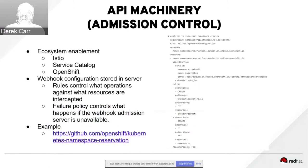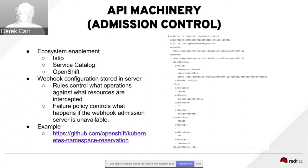Why is this important? Projects like Istio need to inject a common sidecar container into every pod spec. Similarly, the service catalog wanted to dynamically inject environment variables into pods on creation. There was community work around pod presets. OpenShift is interested in intercepting what happens in Kubernetes to perform its own constraints and validation needs. This mutating and validating webhook is really a big ecosystem enabler because it allows people to intercept a creation request and do something in response without touching the core platform.